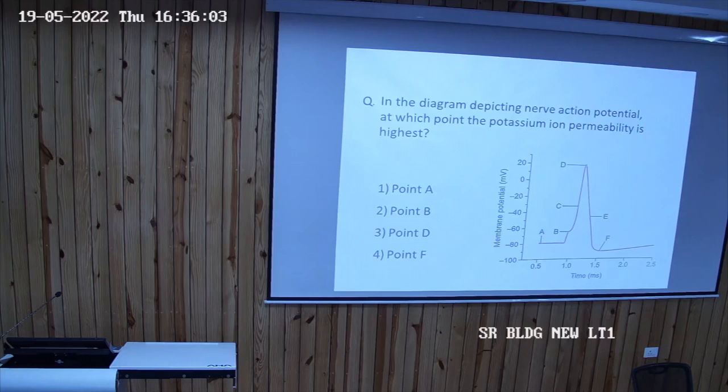And what is this B phase? Firing level. This is the firing level. Your threshold level you can tell. And what is this A? Stimulus. This is the resting one. Stimulus artifact. This is the stimulus you apply there. And what is this D? Spike. Spike potential.